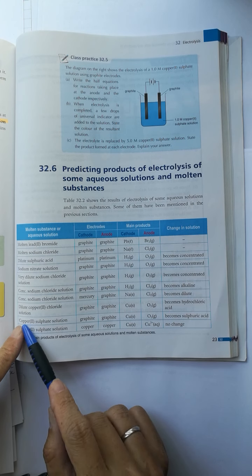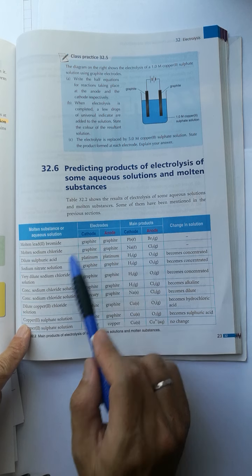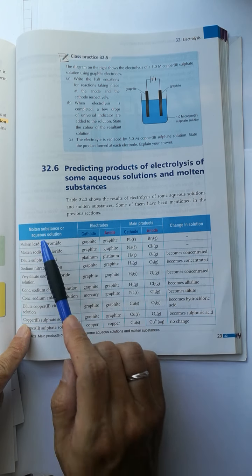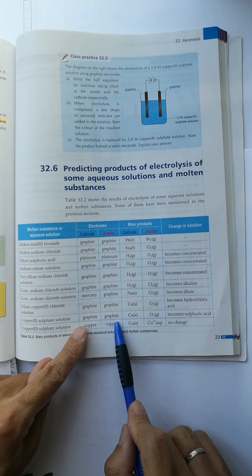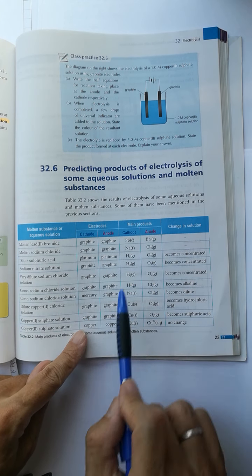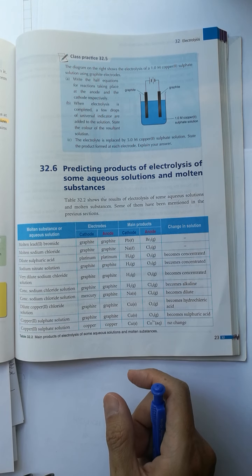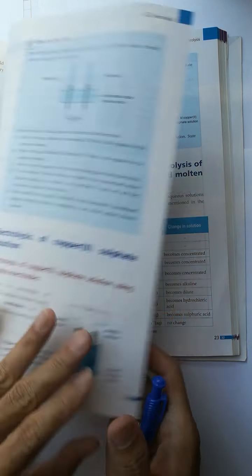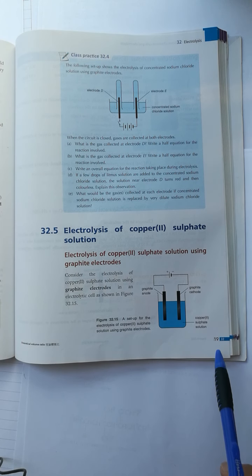One case is copper(II) sulfate solution electrolysis using graphite cathode and anode, as shown on book page 19.